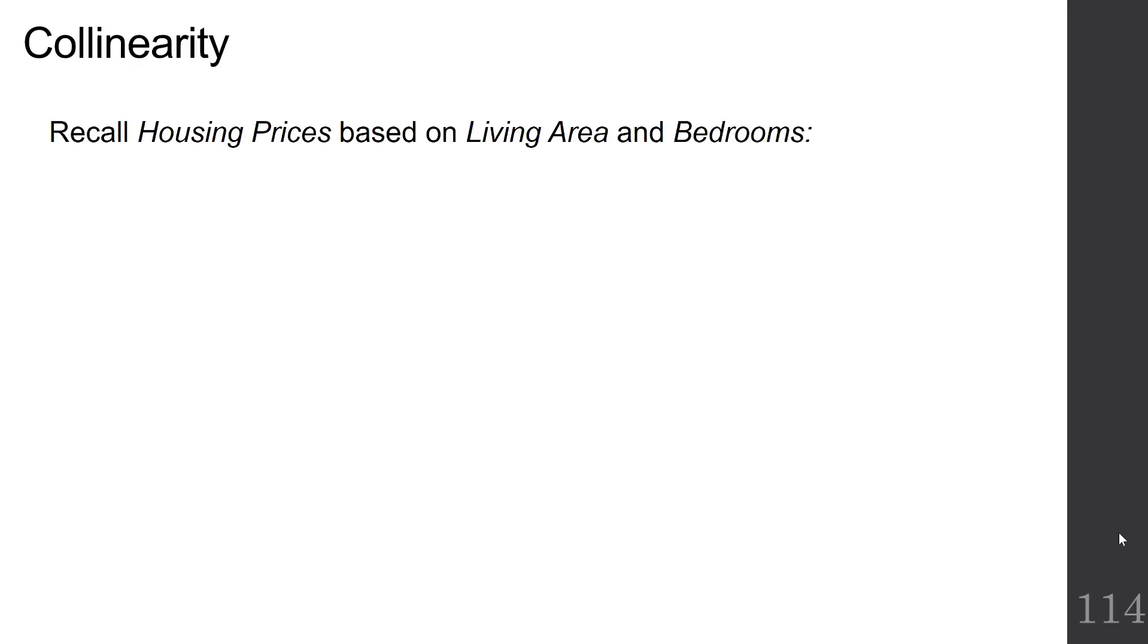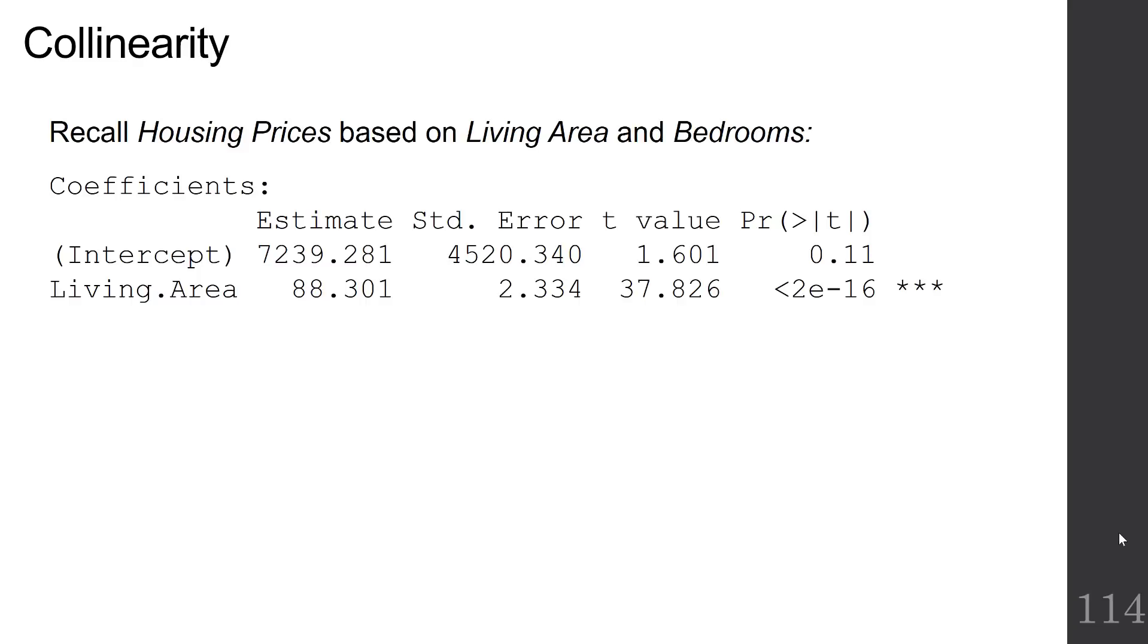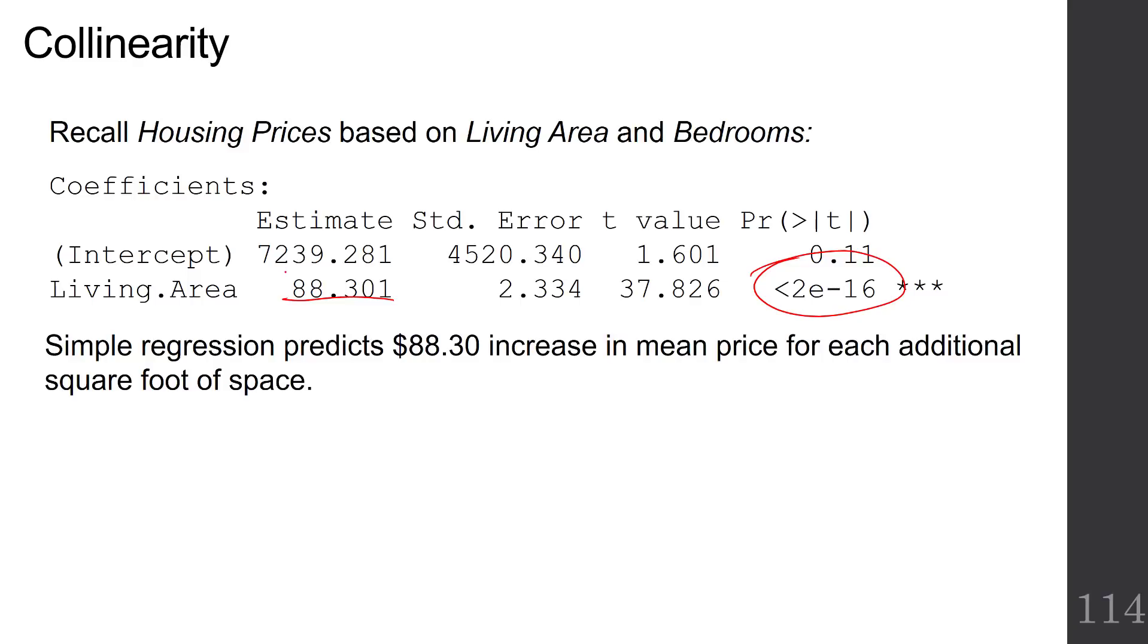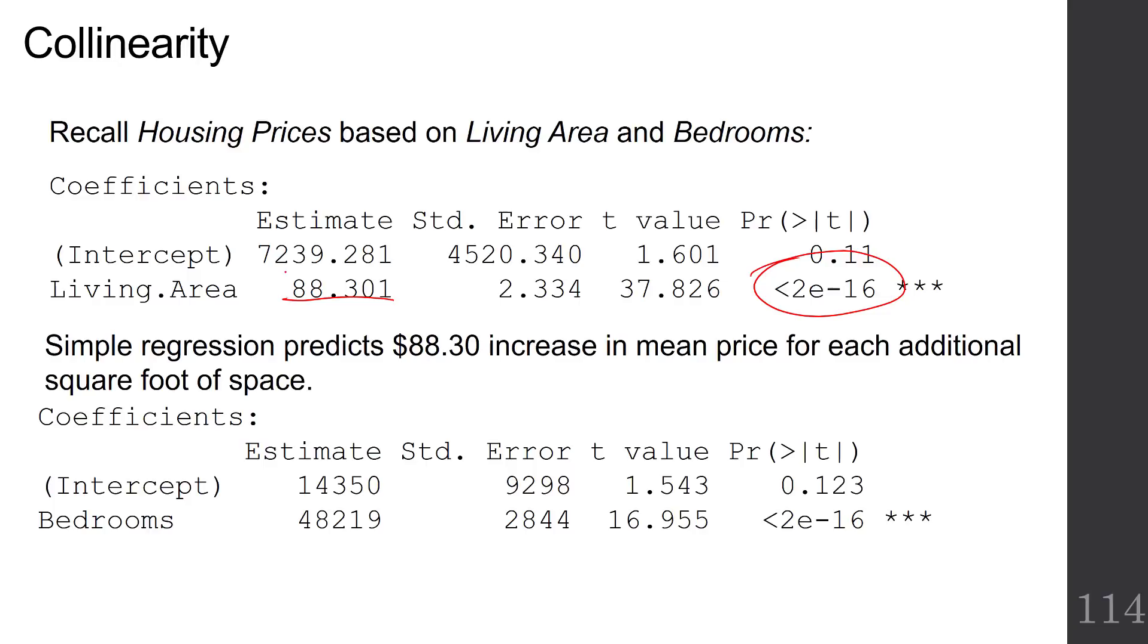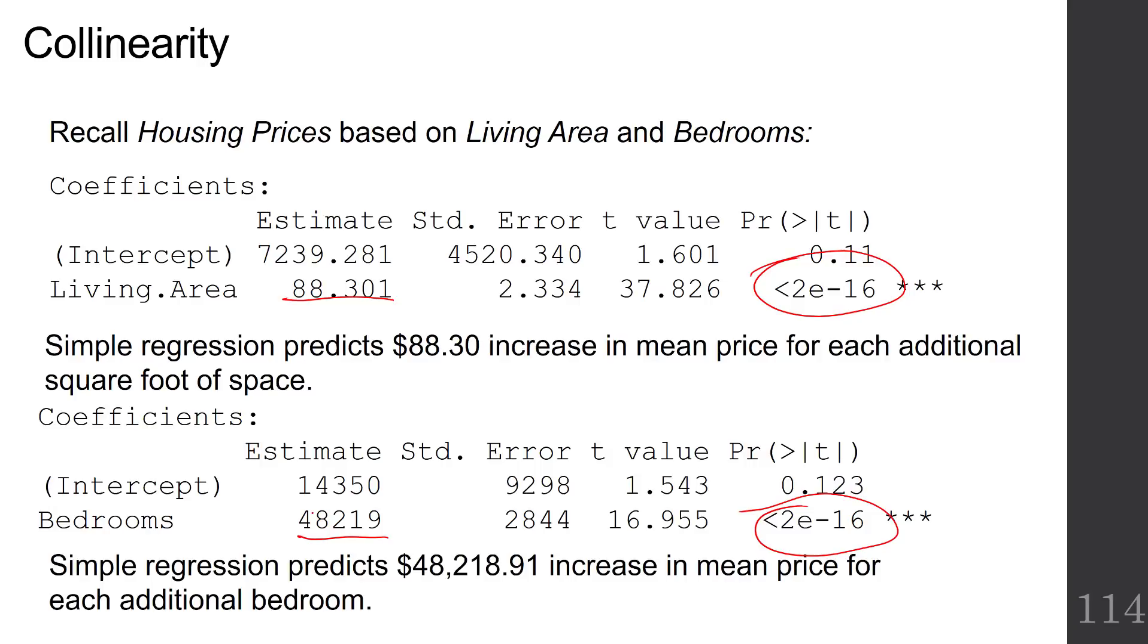So recall the house price data we started this chapter with from Zillow, and we regressed price on living area and we regressed price on bedrooms. The simple linear regression of price against living area was highly significant. The p-value is really tiny and the slope of the coefficient is positive. We expect $88.30 increase in mean price for each additional square foot of space. The regression of house price on bedrooms was again highly significant, positive slope. The simple regression model predicts $48,218.91 increase in mean price for each additional bedroom.